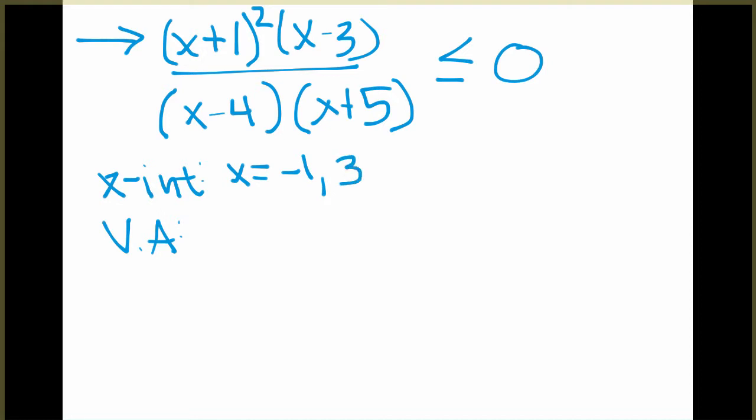So here they occur at negative 1 and 3. The vertical asymptotes, which come from when the denominator is equal to 0. In this case, we will have vertical asymptotes at x equals 4 and x equals negative 5.